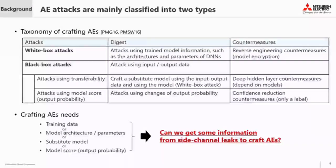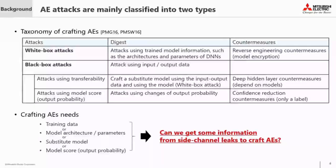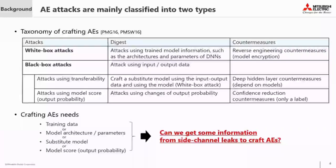This table shows the taxonomy of crafting AEs. The methods are classified mainly into white-box attacks and black-box attacks. White-box attacks use trained model information such as the architecture and parameters of DNNs. Reverse engineering countermeasures such as model encryption protect the model information. Black-box attacks use only input and output data of DNNs. From the attacker's viewpoint, black-box attacks are more serious than white-box attacks because of the reduced attacker knowledge required.